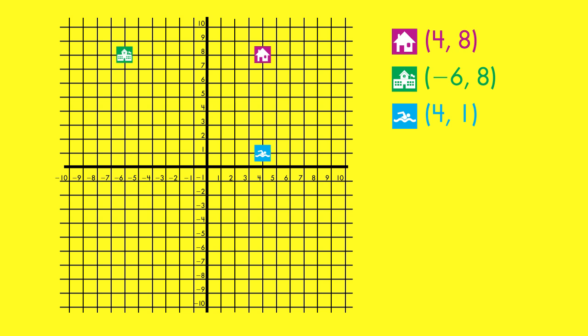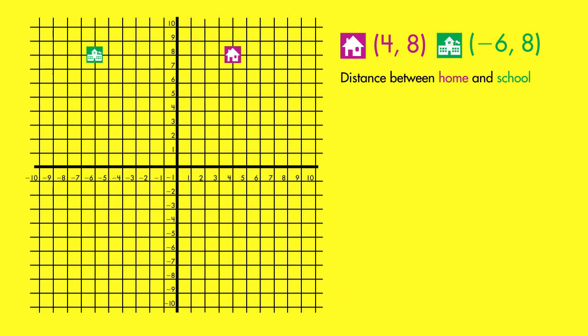To find the distance between two points on a coordinate grid, you'll find the difference between their locations. Let's find the distance between home and school. On this grid,